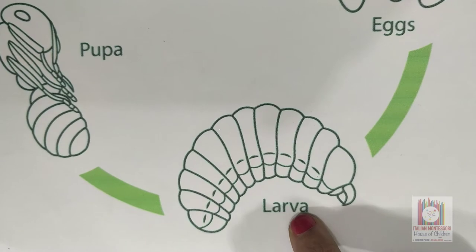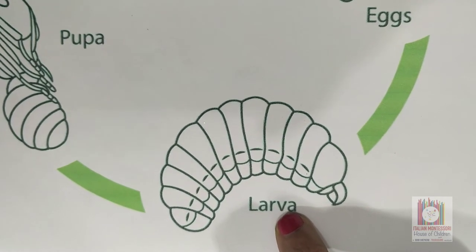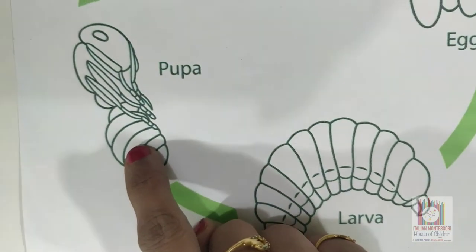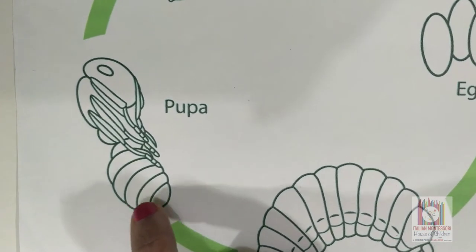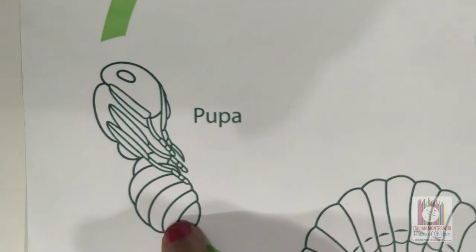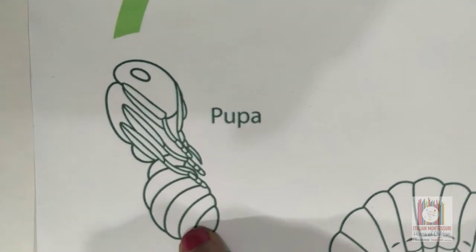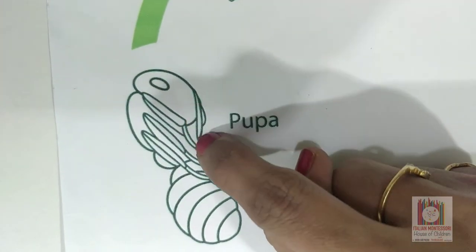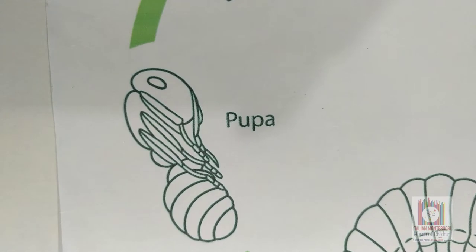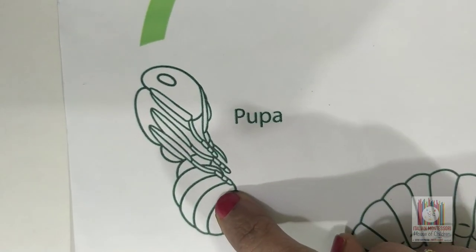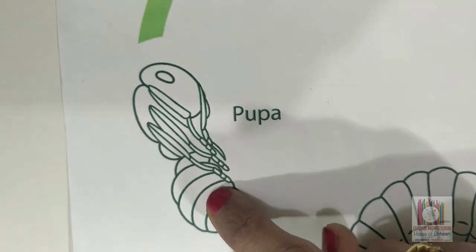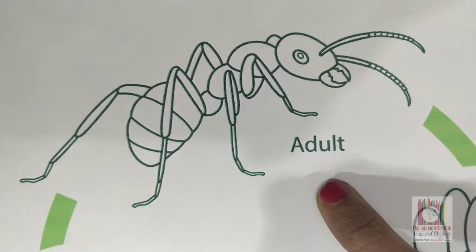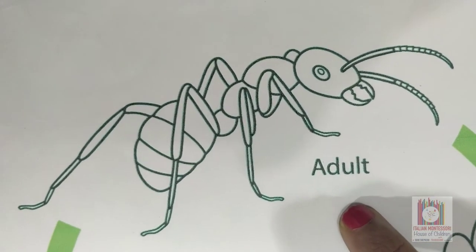When the larva becomes big enough, it changes its stage to pupa. The pupa looks more similar to an adult ant, but its antennae are folded inside. Then the pupa emerges as an adult ant. The adult ant is fully grown.